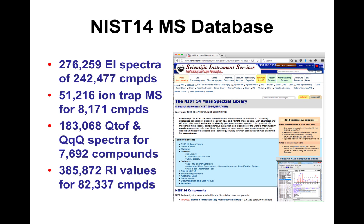The largest library is the NIST database, maintained in the U.S. and commercially available. NIST 14, released in 2014, has almost 300,000 EI spectra for almost a quarter million compounds — though the number is slightly exaggerated since derivatized forms are counted separately, so the unique parent compound count may be about a quarter of that. They also have ion trap and QTOF spectra, as well as retention index values for about 80,000 compounds.